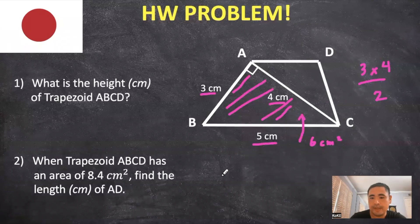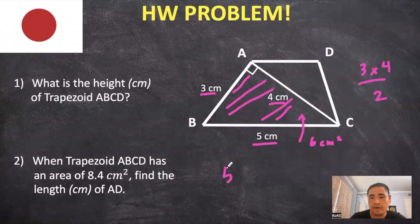Next, we can use the base of five right here, and the height that we're trying to figure out, divide that by two. And we know that the area of the triangle is equal to six, and find out the height that way.